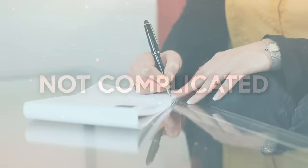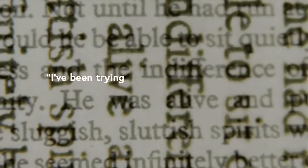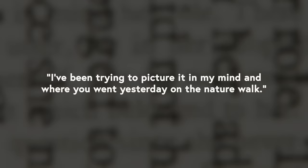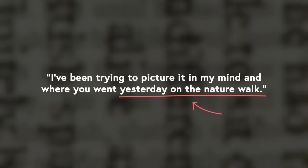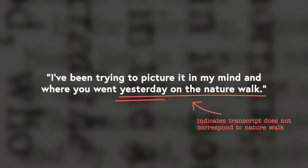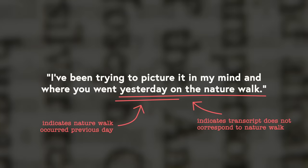In Marks and Kamen's experiments, before they gave the transcripts to the judges, they edited out certain non-psychic-y lines that might have provided unfair clues about how to match them up. The original experiments did… not that. Take for example, this sentence that was left in an original experiment transcript: "I've been trying to picture it in my mind, and where you went yesterday on the nature walk." Now, this gives the judge two key pieces of information. First, this transcript does not correspond to the nature walk location. Second, this transcript does correspond to a place that was visited the day after the nature walk. The transcripts were full of information about things that happened on previous days.